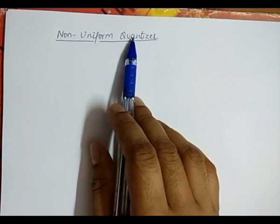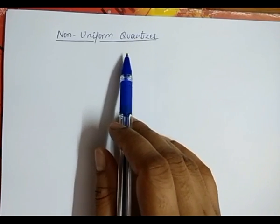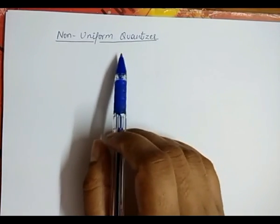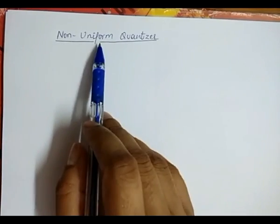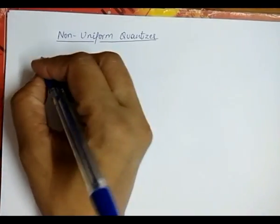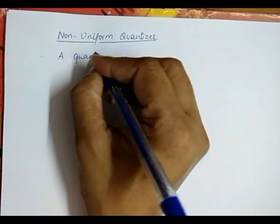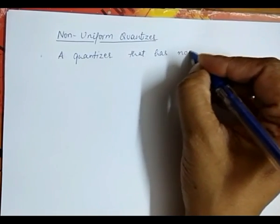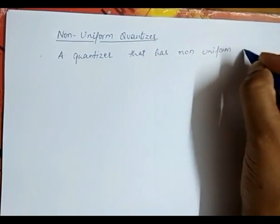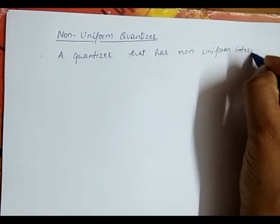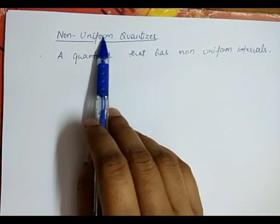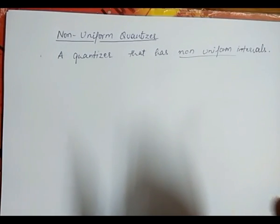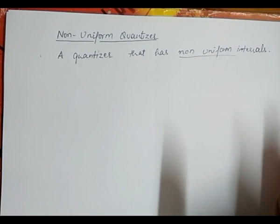In my previous video, we already discussed the uniform quantizer and adaptive quantization. The next quantization technique in scalar quantization is the non-uniform quantizer. As the name suggests, a quantizer that has non-uniform intervals is known as a non-uniform quantizer. Non-uniform interval means the step size between all the intervals is not constant.